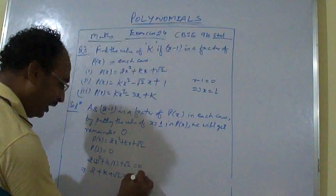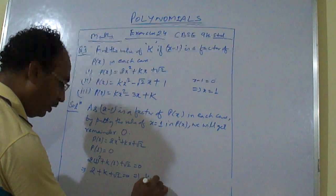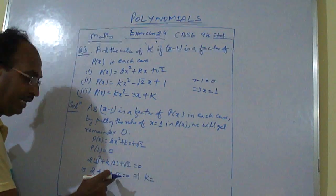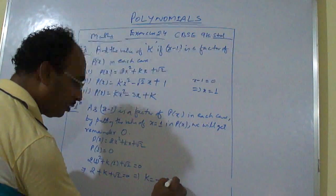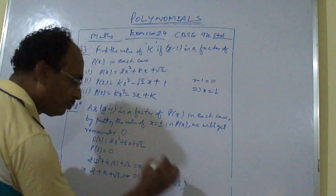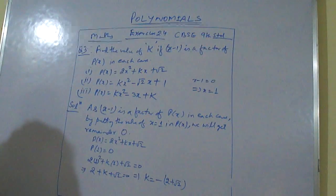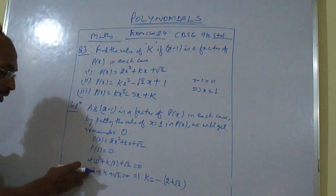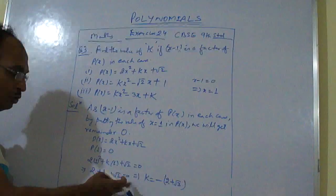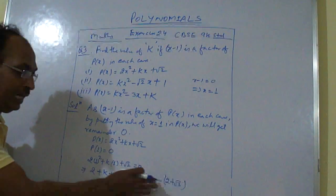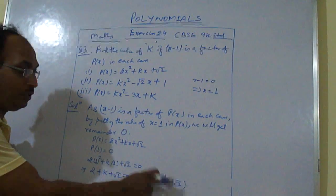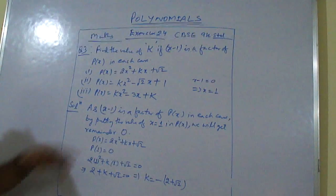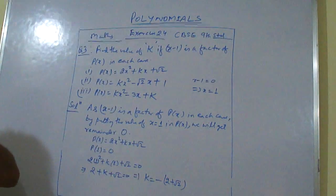So now we are finding k. Both 2 and root 2 will go to the other side, both becoming minus. So k is equal to minus 2 minus root 2. We can also write this as minus 2 plus root 2 — wait, minus 2 minus root 2. So the value of k is minus 2 minus root 2. With this value of k, x minus 1 will become a factor.